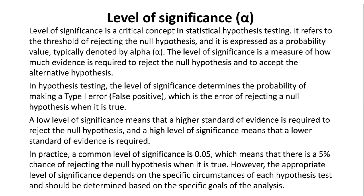A high level of significance means that a lower standard of evidence is required. In practice, a common level of significance is 0.05, which means that there is a five percent chance of rejecting the null hypothesis when it is true. However, the appropriate level of significance depends on the specific circumstances of each hypothesis test.